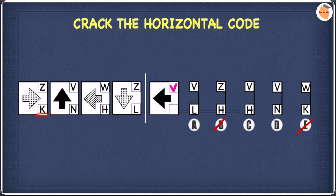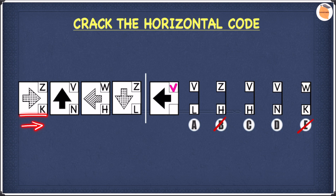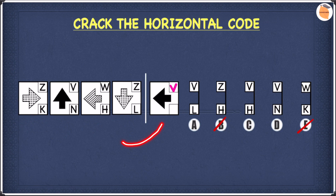Let's move on to the second letter, which are K, N, H and L. None of these letters are the same, so this means there's something different between all four shapes. The only thing that's different is the fact that they're all pointing in different directions: the first arrow points right, the second points upwards, the third points left, and the fourth points down. Looking at the shape on the right, the arrow is pointing towards the left.